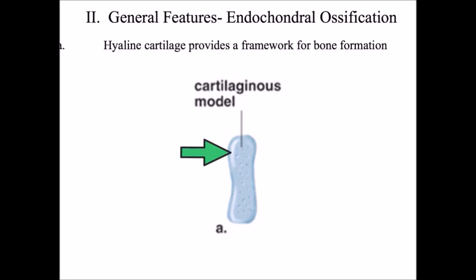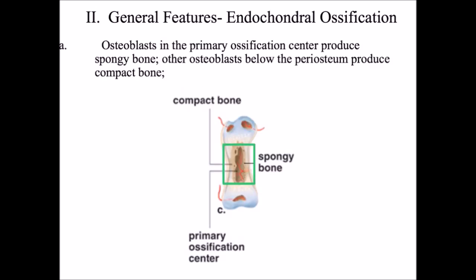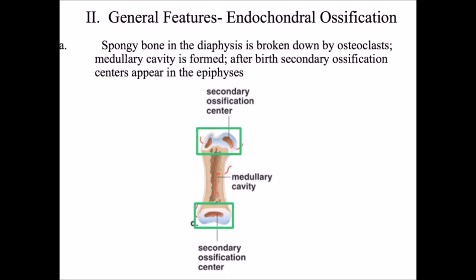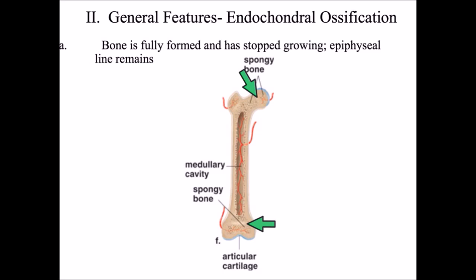The first step in endochondral ossification is the cartilage model, which provides a framework. At the center of this cartilage model, cells spontaneously change into osteoblasts; within the diaphysis, osteoblasts begin laying down bone at the primary ossification center, replacing cartilage with bone. After birth, secondary ossification centers appear within the epiphyses. Throughout growth, bones continue to lengthen as long as there is cartilage between the epiphysis and the diaphysis.